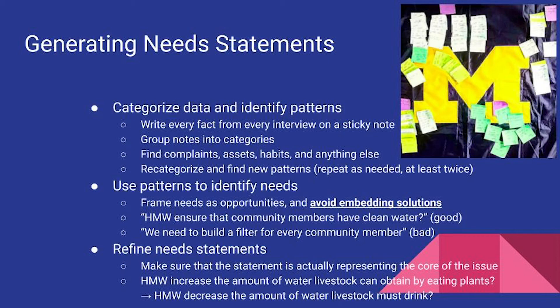Use patterns to identify needs, framing them as opportunities and avoiding embedding solutions. For example, 'how might we ensure community members have clean water' is a good needs statement that gets to the core of the issue. But 'we need to build a filter for every community member' is a bad needs statement because it assumes every community member needs their own filter, when maybe every household needs one, or households could be grouped into pods sharing a filter. You also need to refine needs statements to make sure they represent the true issue you're trying to deal with.